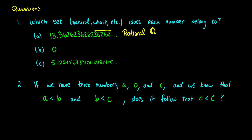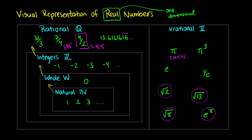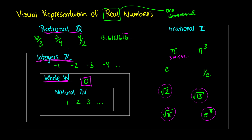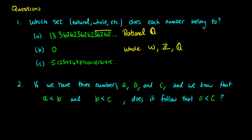What about zero? Zero is our whole number — W — since the whole numbers start at zero. But zero is also an integer, and it is also a rational number. If we look at the diagram, the whole numbers are part of the integers, and the integers are part of the rational numbers. So if zero is a whole number, then it belongs to the whole numbers, the integers, and the rational numbers.